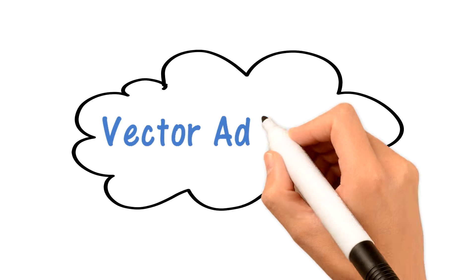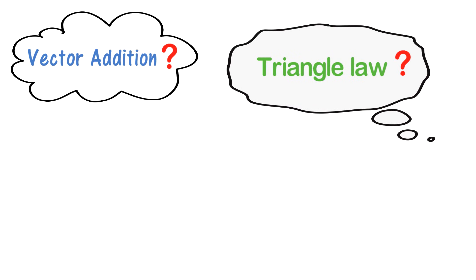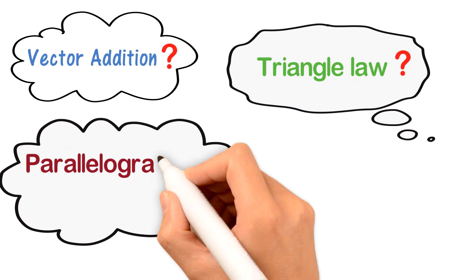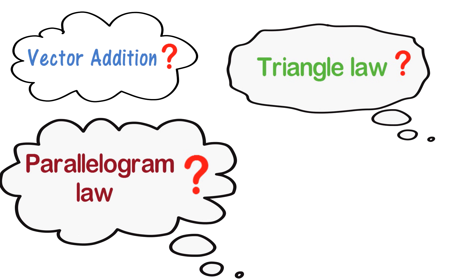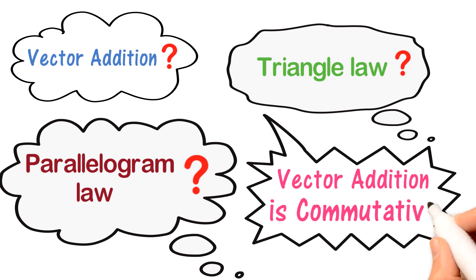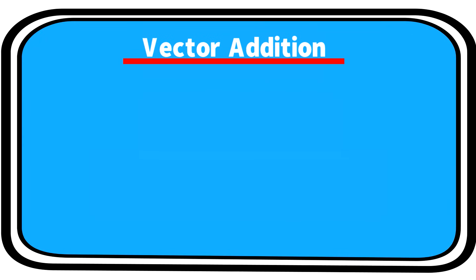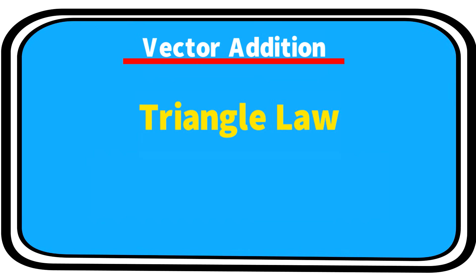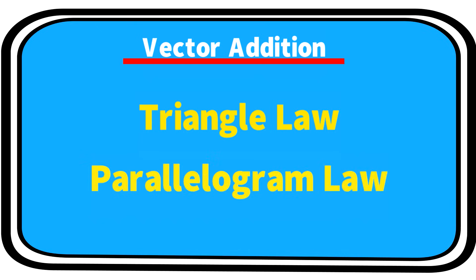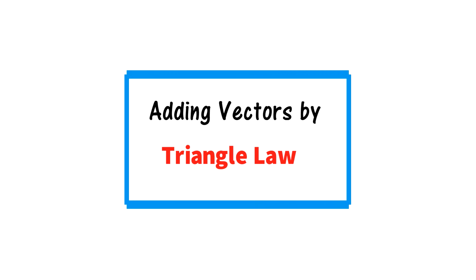What is addition of vectors? What is the triangle law of addition? What is the parallelogram law of addition, and why is vector addition commutative? We can add vectors by two different laws: by the triangle law and by the parallelogram law.